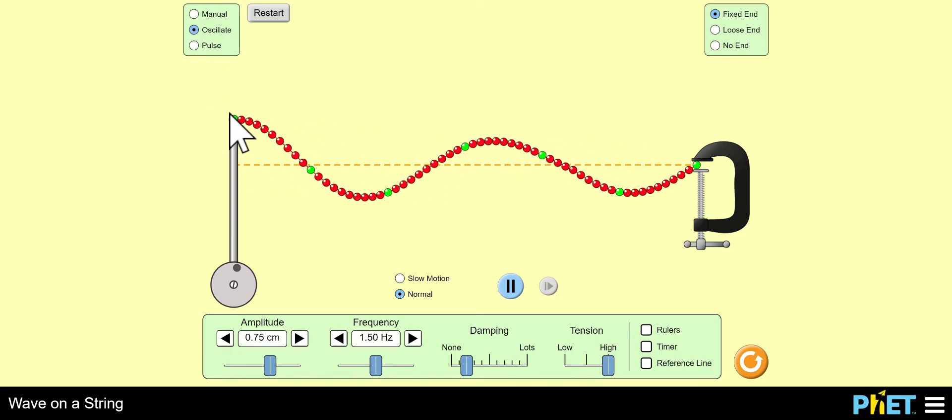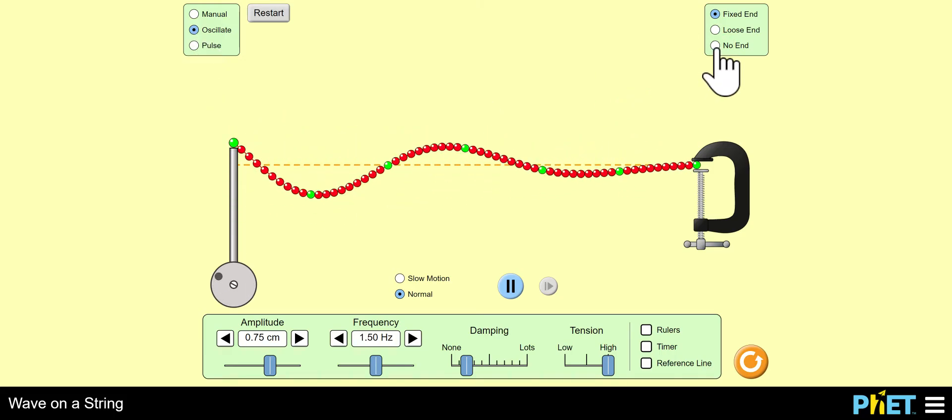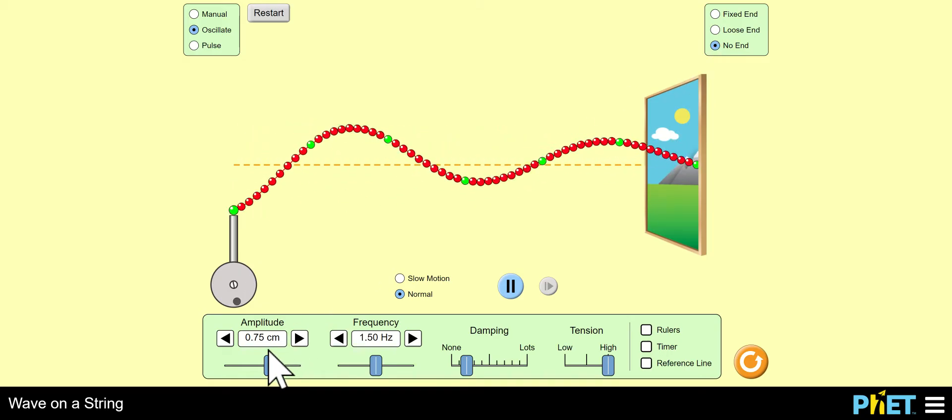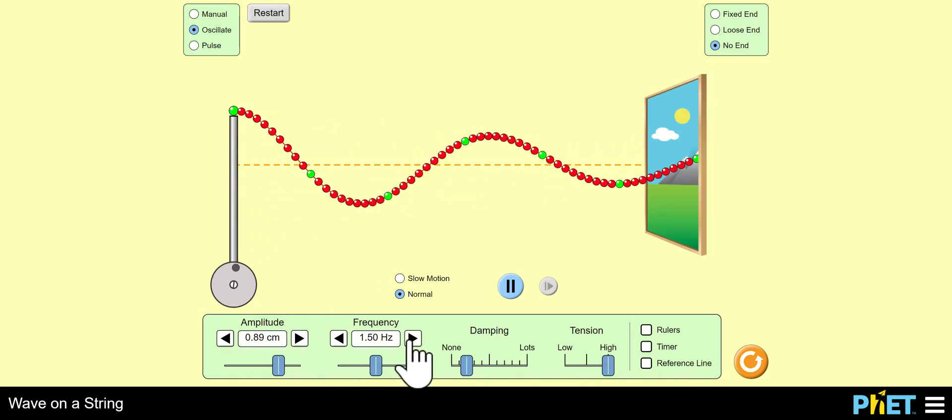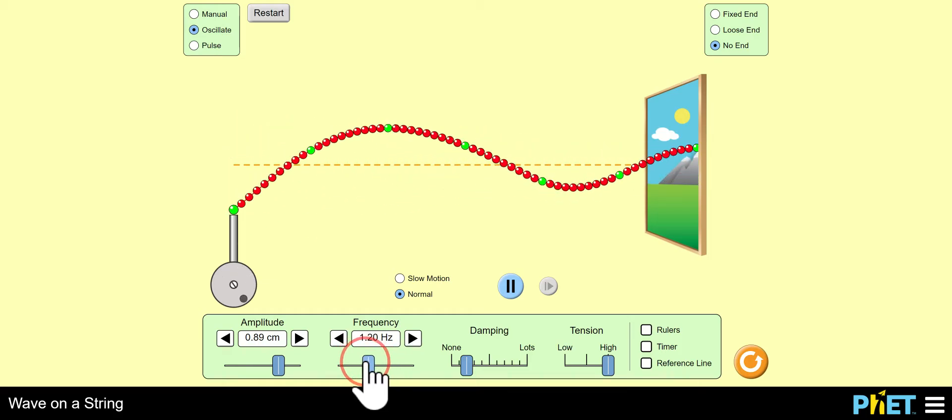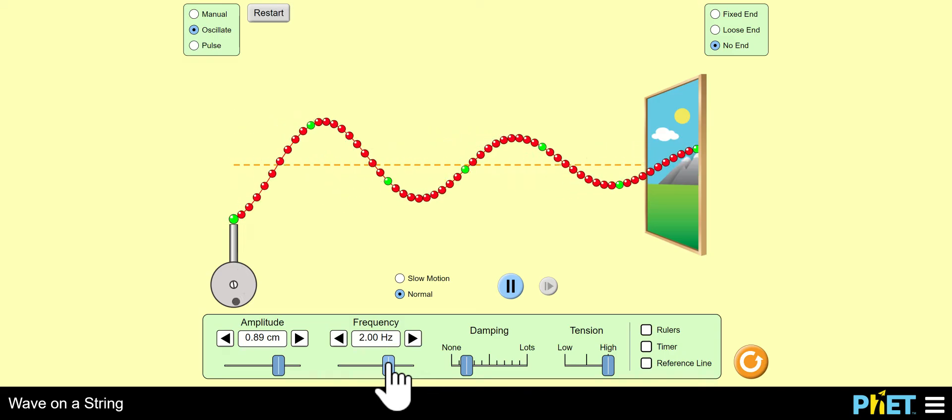Oscillate. No end. We'll do it again. That's worthwhile. No end. Amplitude to one. And here's how you change the frequency. And a lot of this lab is about frequency and the velocity of the wave.